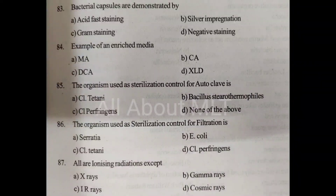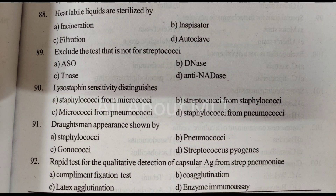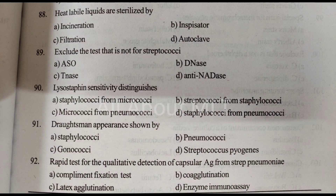Heat labile liquids are sterilized by. Option A: Incineration. Option B: Inspicator. Option C: Filtration. Option D: Autoclave. Answer is Option C: Filtration.